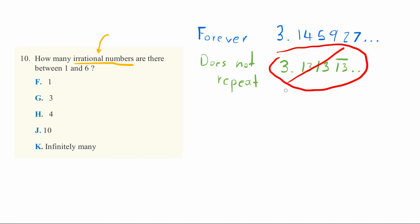So this is not irrational. And now we want to ask the question, how many irrational numbers are there between the number 1 and 6? So let's try creating one.